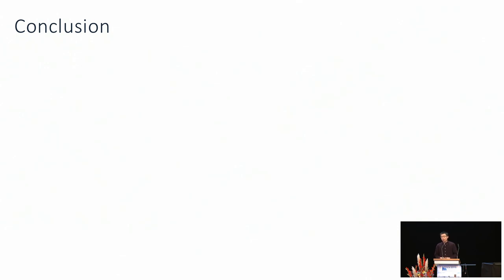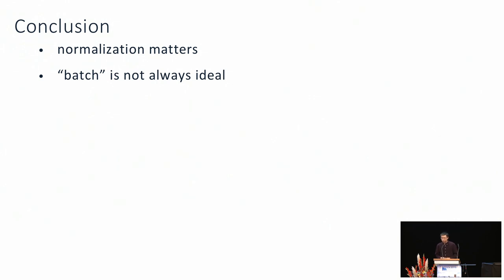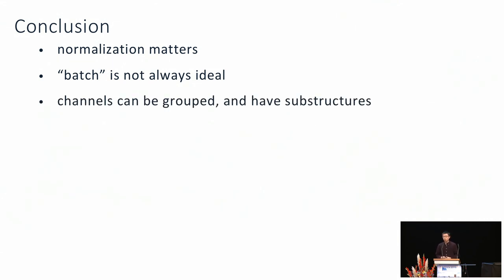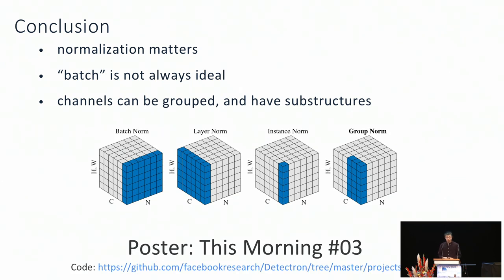In conclusion, we propose group normalization as a batch-independent alternative to batch norm. Through our experiments, we show that some form of normalization matters as it helps optimization of CNNs, but normalization on batch may not always be ideal, especially in certain scenarios. By splitting channels into groups, we can perform normalization on groups, which turns out to be more effective than other batch-independent normalization methods. Please come to our poster session this morning, and our code is available as part of the Detectron platform.